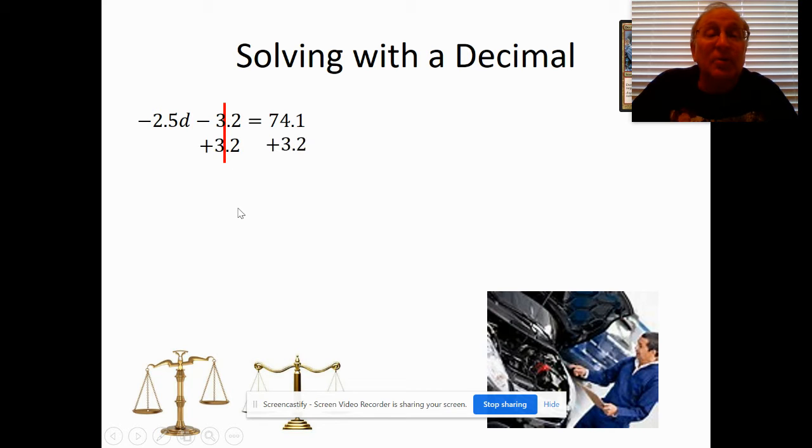The reason to add 3.2 is so those will cancel out. But what I do to one side I have to do to both to keep it even. So I add 3.2 to the 7.41, that makes 77.3.